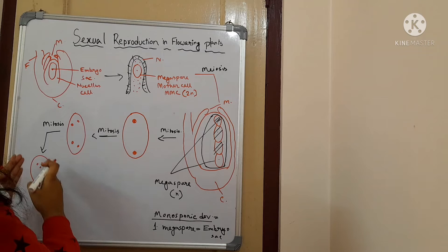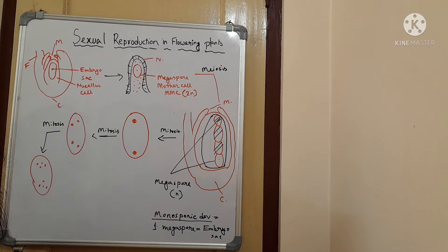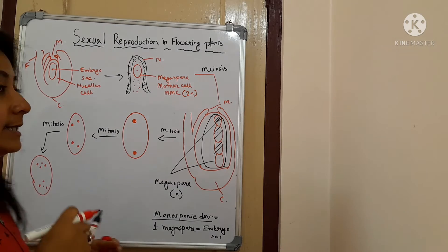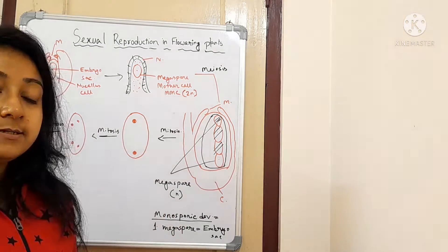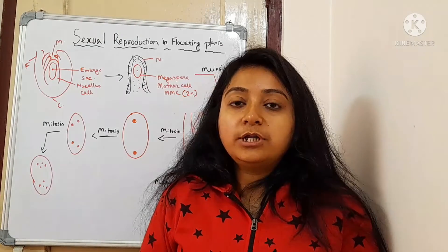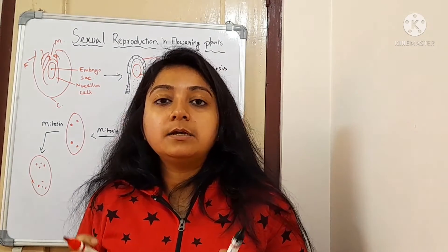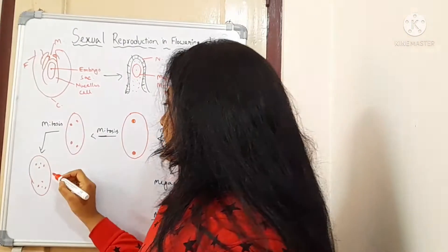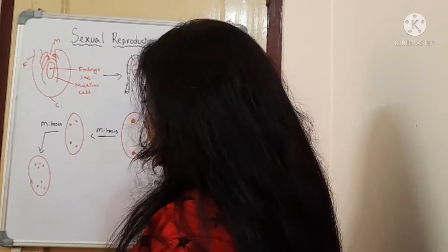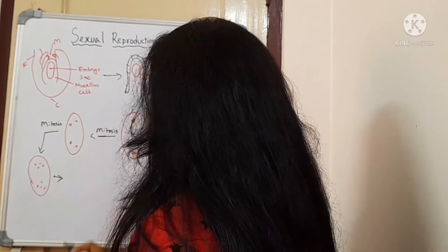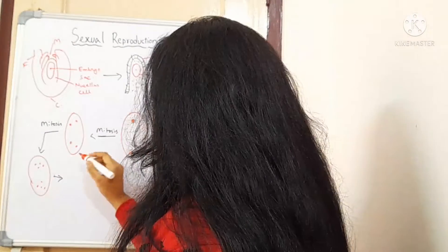Now you can see that there are eight nuclei present inside this structure. These eight nuclei will rearrange themselves and a cell membrane will form surrounding each of the eight nuclei. Let us now see how this structure is converted into the mature embryo sac.